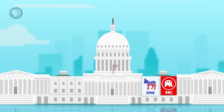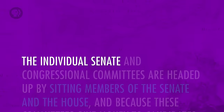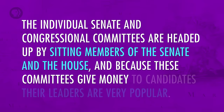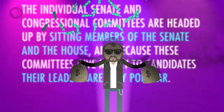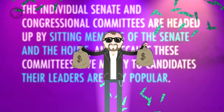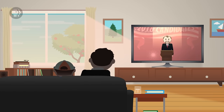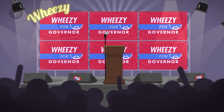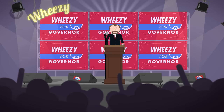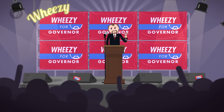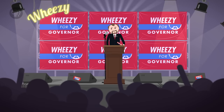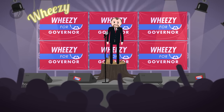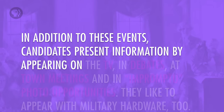These organizations can coordinate all national-level campaigns, especially those for president. Each House of Congress also has a Republican and a Democratic campaign committee. The individual Senate and congressional committees are headed up by sitting members of the Senate and the House. And because these committees give money to candidates, their leaders are very popular. Campaigns provide information in a number of ways. The main thing they do is communicate with the public, usually through the media, which we'll discuss in greater depth in future episodes. The mainstay of political campaigns is the organized event where candidates can present information about themselves and their policies directly to voters through speeches.